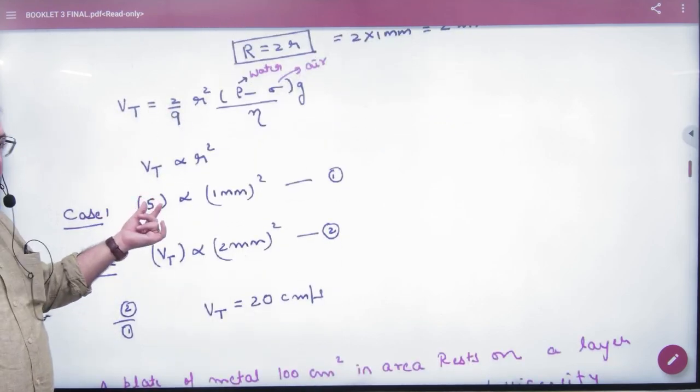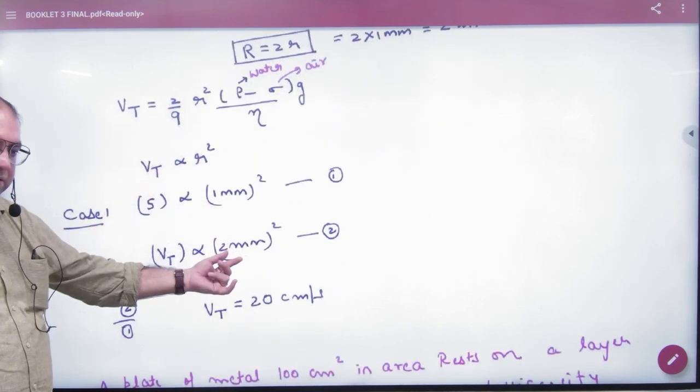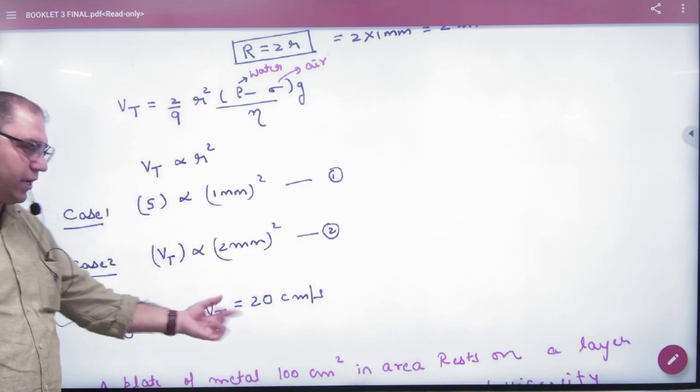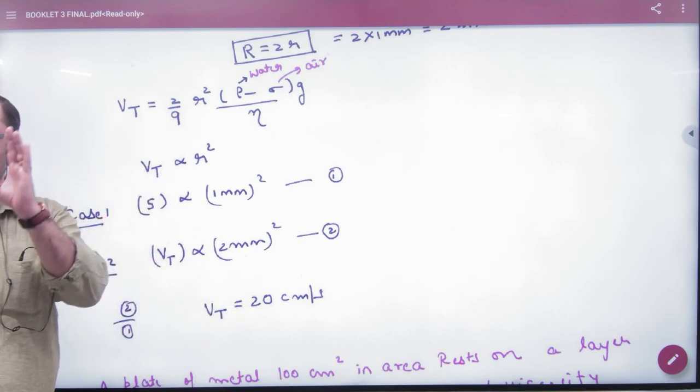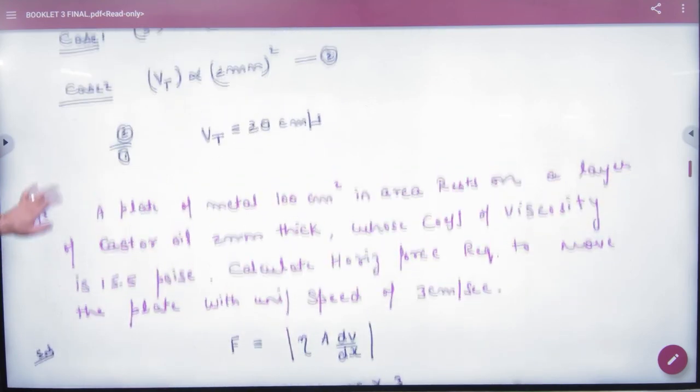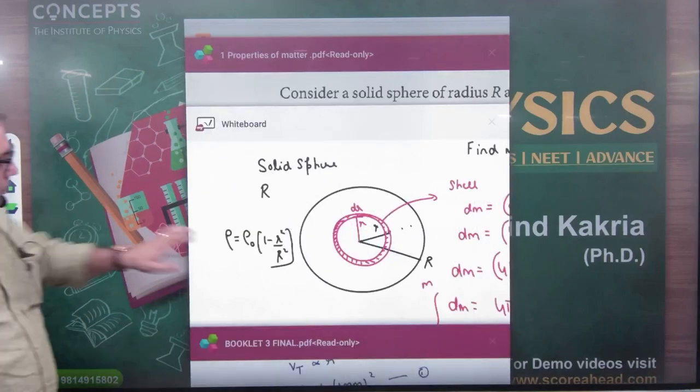The small drop terminal velocity is 5. Using the volume relation to find the big drop's radius, then applying the r² proportionality, we can find the big drop's terminal velocity. This exact question appears in mains exams.